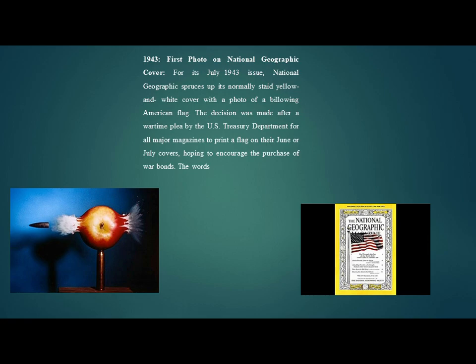In 1943, for its July 1943 issue, National Geographic replaced its normally static yellow and white cover with a photo of a billowing American flag. The decision was made after a wartime plea by the U.S. Department requesting all major magazines to print a flag on their June or July covers to encourage the purchase of war bonds.